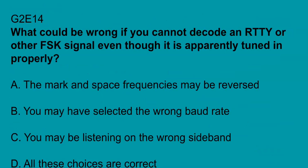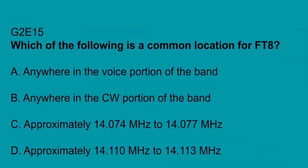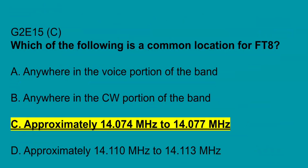G2E14: what could be wrong if you cannot decode an RTTY or other FSK signal, even though it is apparently tuned in properly? All of these choices are correct: the mark and space frequencies may be reversed, you may have selected the wrong baud rate, or you may be listening on the wrong sideband. G2E15: which of the following is a common location for FT8? Approximately 14.074 MHz to 14.077 MHz.